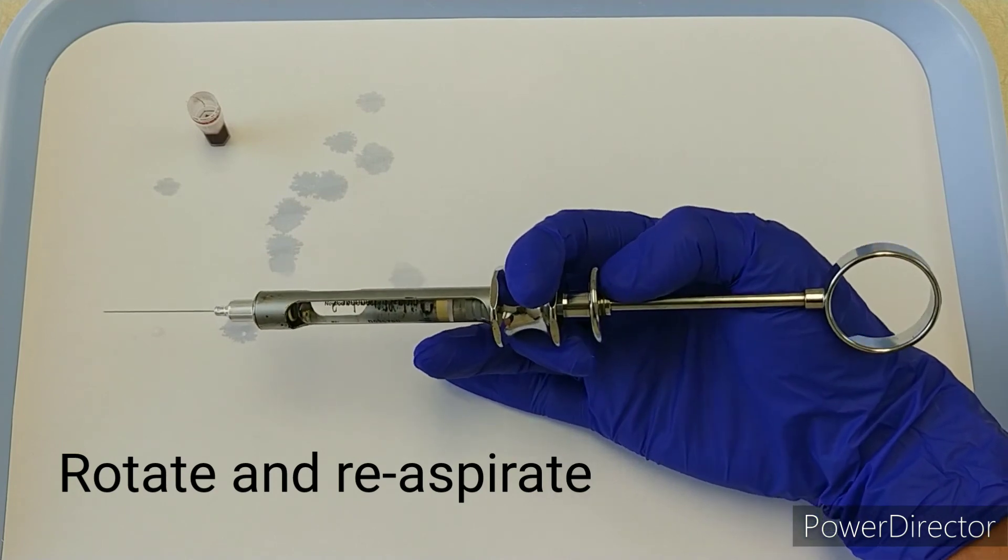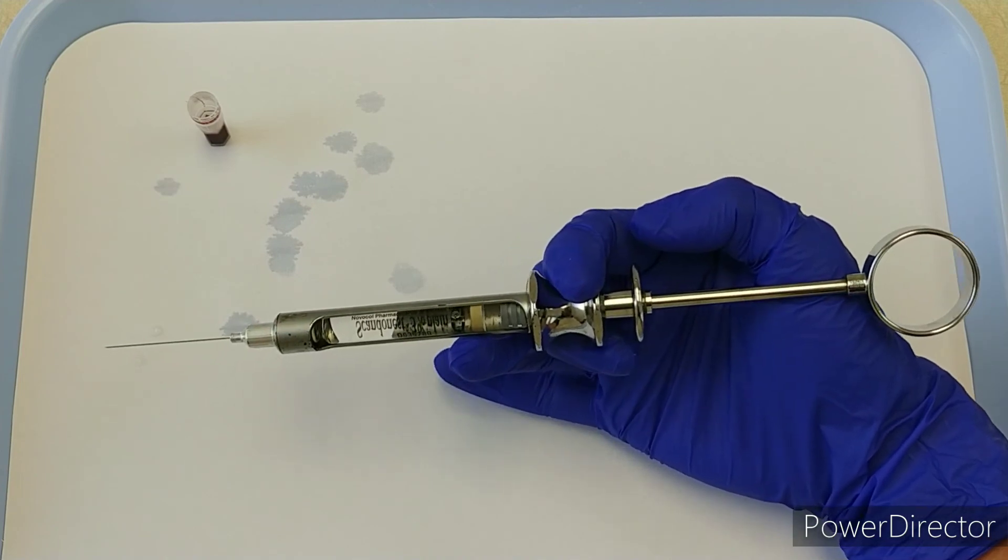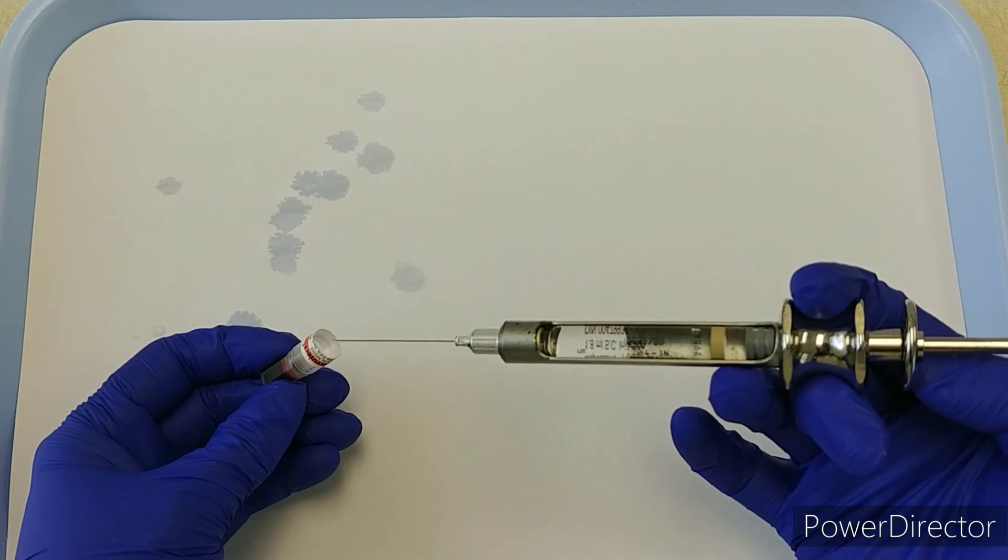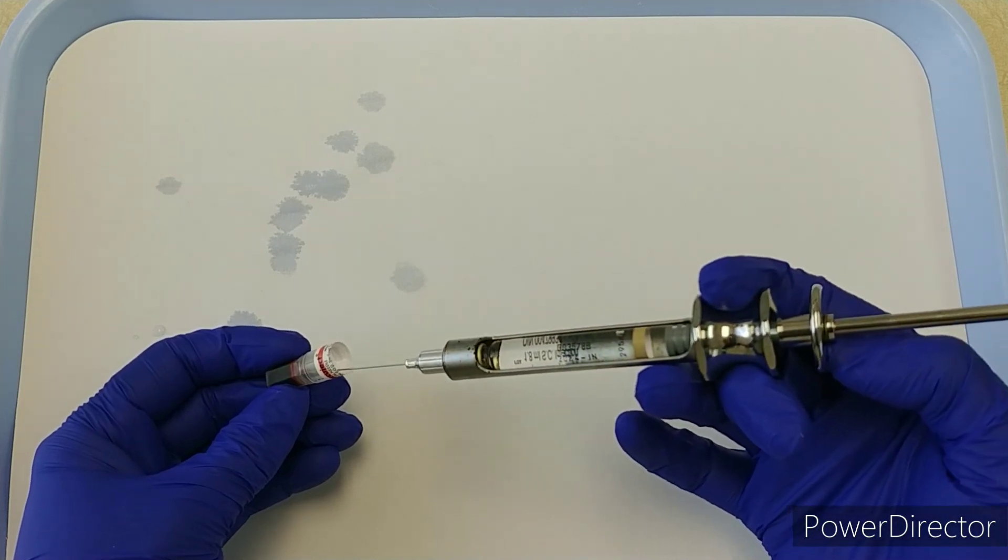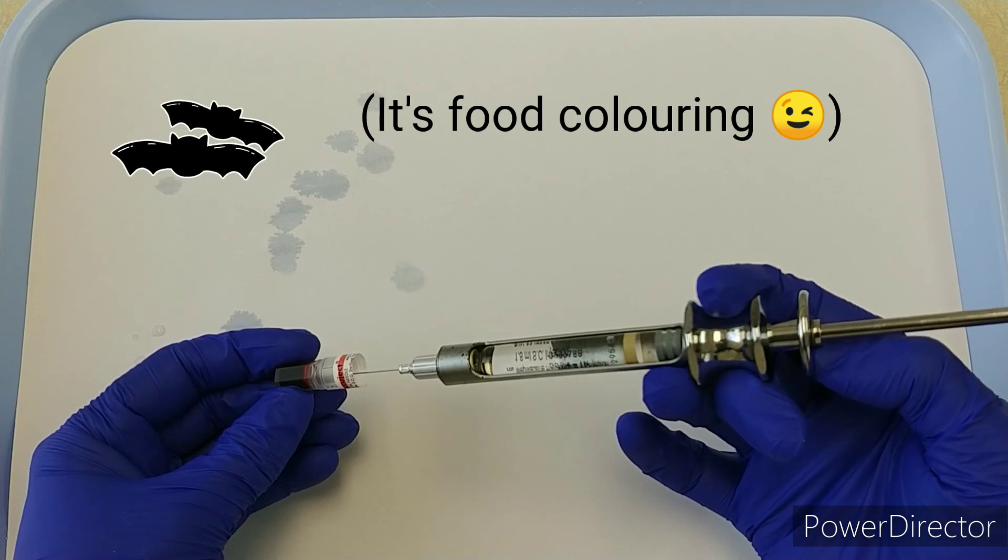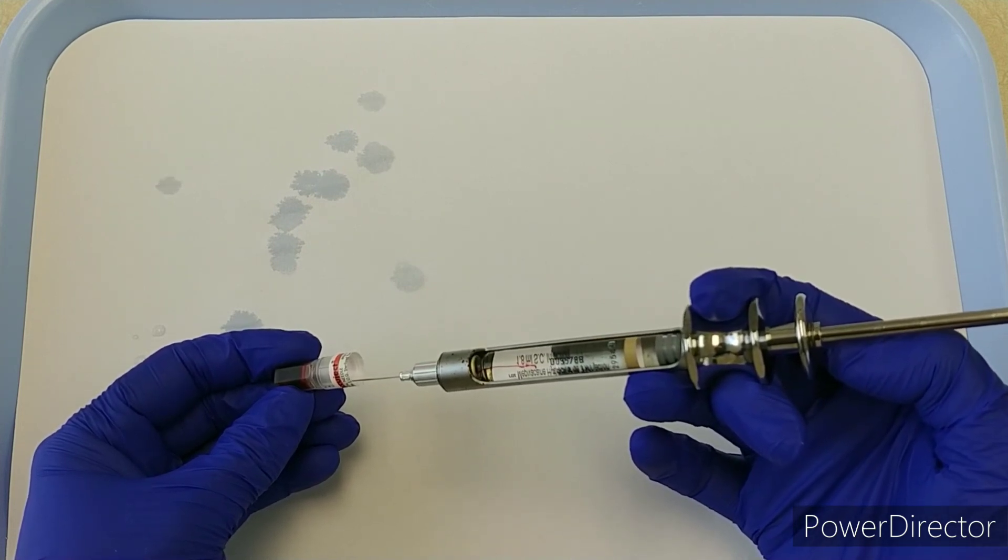If I'm going to get a positive aspiration with this self-aspirating syringe, I've got my little vial of blood there again. I'm going to push and you'll see how it goes into that cartridge.